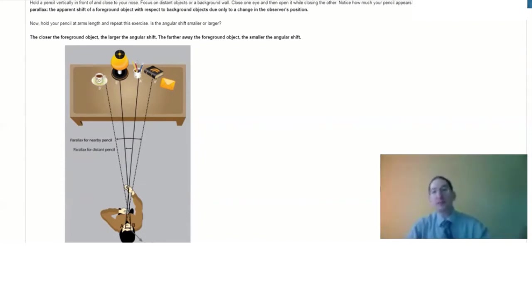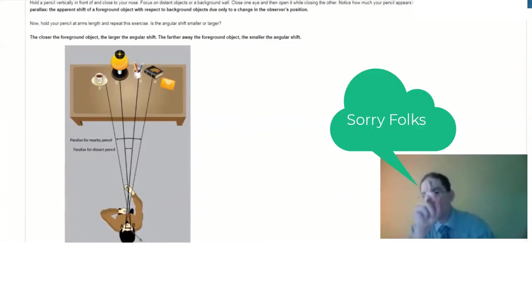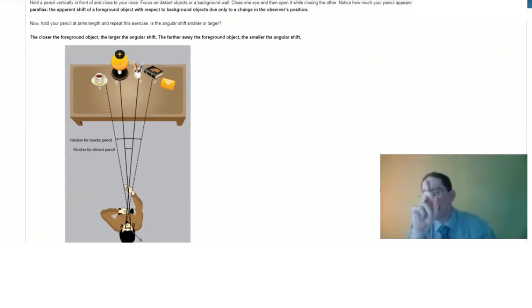For example, grab a finger, preferably your own, and put it close to your face. Close one eye and notice where on the background wall your finger lands. Then switch to your other eye and notice where it lands. And you can go back and forth and you can see the angular shift. If you can measure that angular shift and you know the distance between your eyes, you can calculate the distance between your face and your finger. And when your finger's close, it should be a pretty big angular shift.